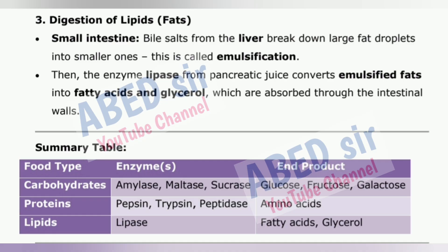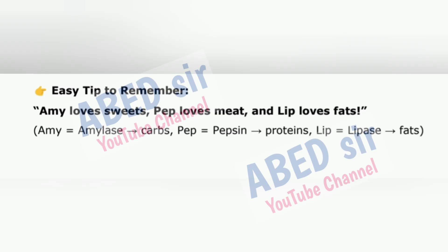Summary: Carbohydrates — amylase, maltase, sucrase → glucose, fructose, galactose. Proteins — pepsin, trypsin, peptidase → amino acids. Lipids — lipase → fatty acids, glycerol. Easy tip to remember: Amy loves sweets, Pep loves meat, and Lip loves fats. Amy = amylase (carbs), Pep = pepsin (proteins), Lip = lipase (fats).